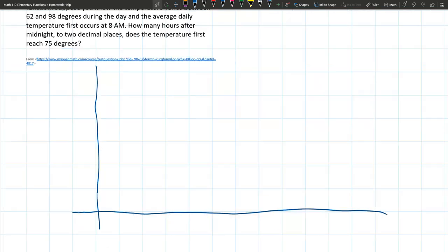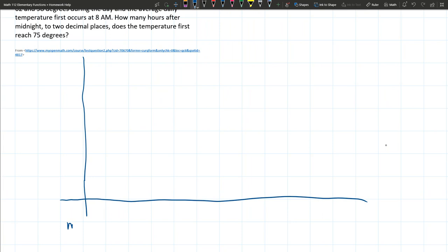Let's say that this is midnight right here, which would be 0. Usually we would say 12, but that would be the same as midnight. Then there'd be 1 AM, 2 AM, 3 AM. Let's count by 2's I think would be good: 2, 4, 6, 8, 10, 12.